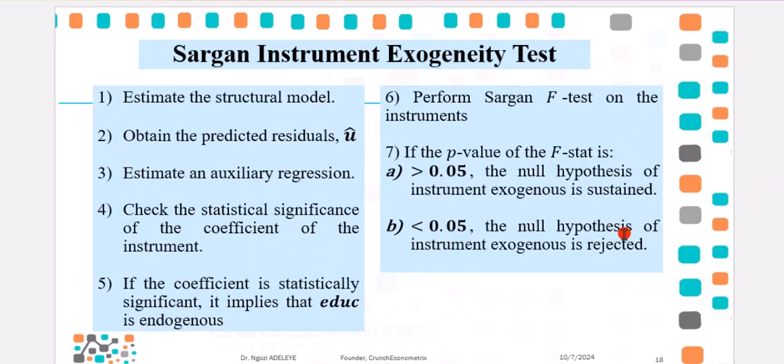These are the steps that you can engage to perform the Sargan instrument's exogeneity test. First of all, estimate the structural model. Go ahead to obtain the predicted residuals. Then, estimate an auxiliary regression. In that auxiliary regression, from that result, check for the statistical significance of the coefficient of the instrument. If that coefficient is significant statistically, it implies that a Duke is endogenous. But if that coefficient is not significant statistically, it shows that a Duke statistic is exogenous.